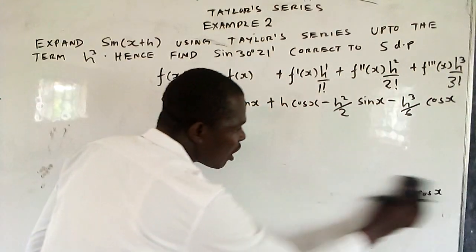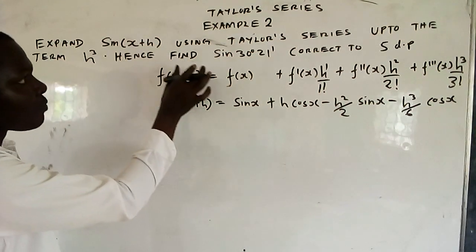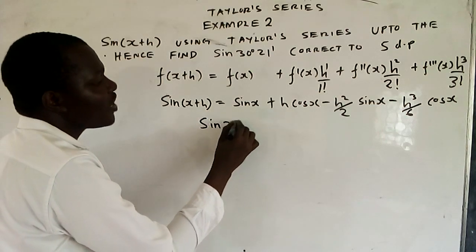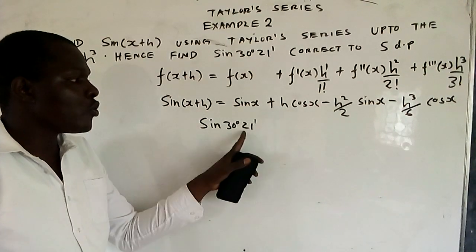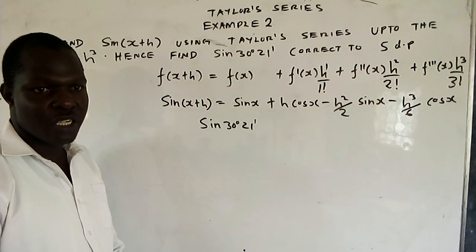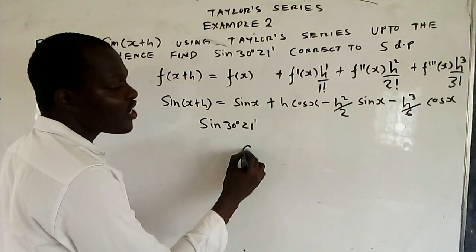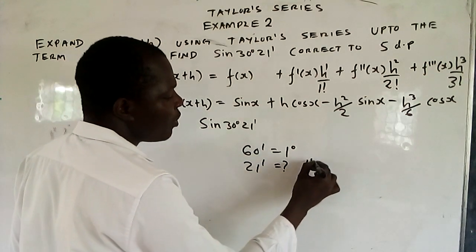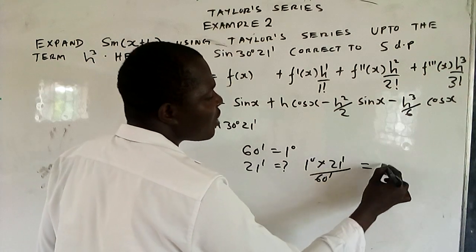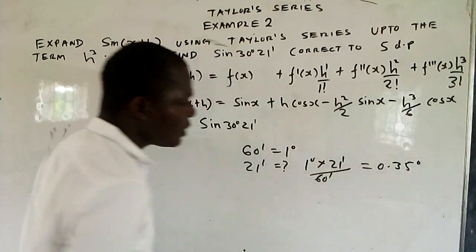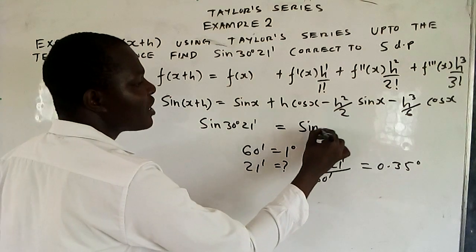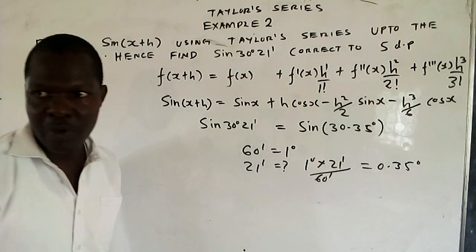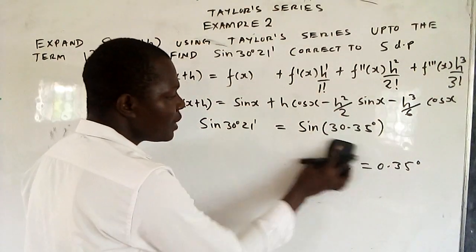Now they want us to use it to solve sine 30 degrees 21 minutes. You know 60 minutes is 1 degree, so 21 minutes equals 1 degree times 21 over 60, which gives 0.35 degrees. So here you'll have sine 30.35 degrees.